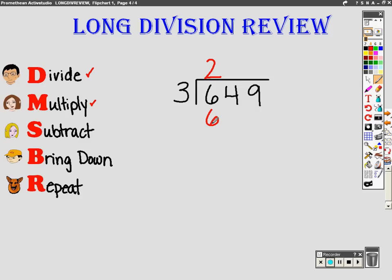The next step is to subtract. Six minus six is zero. Now we bring down. Remember, you need to bring the four straight down.